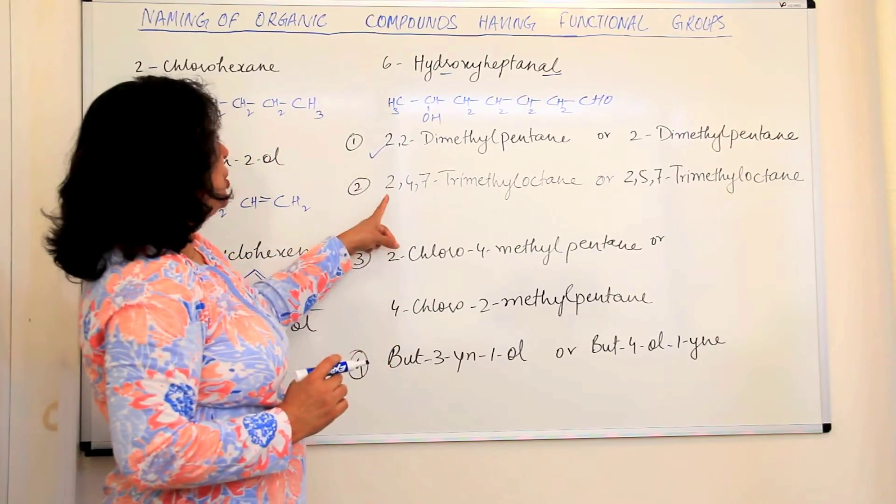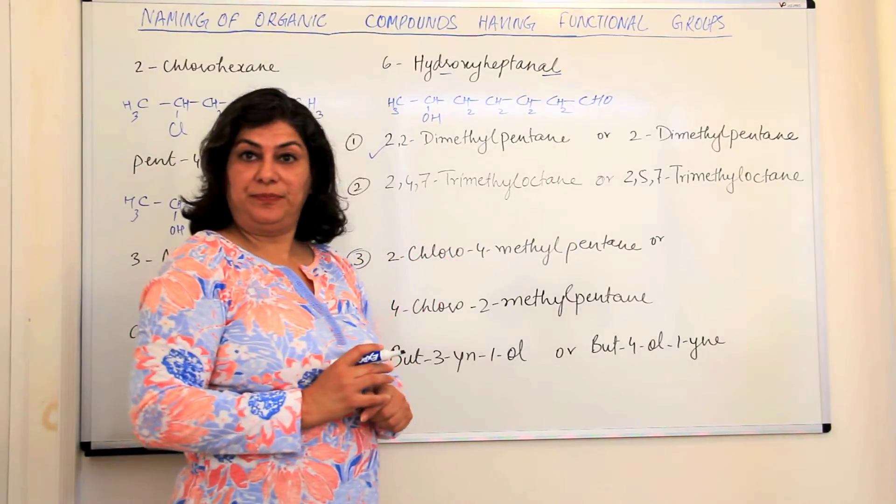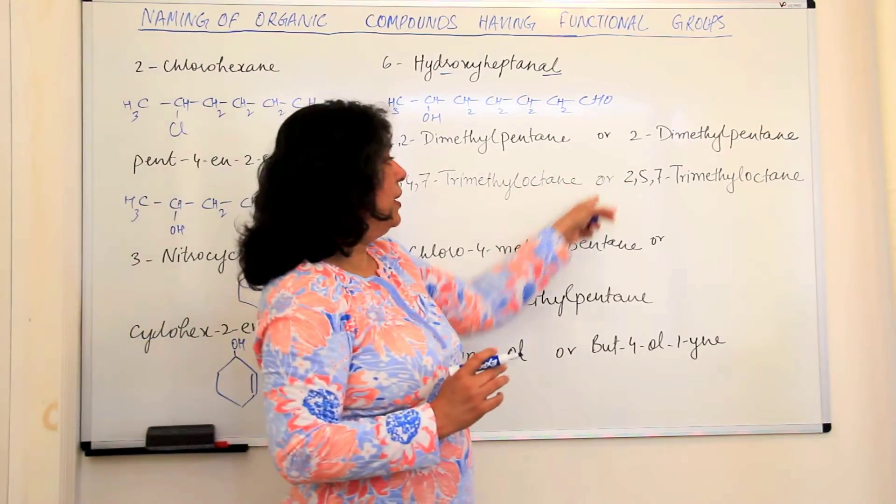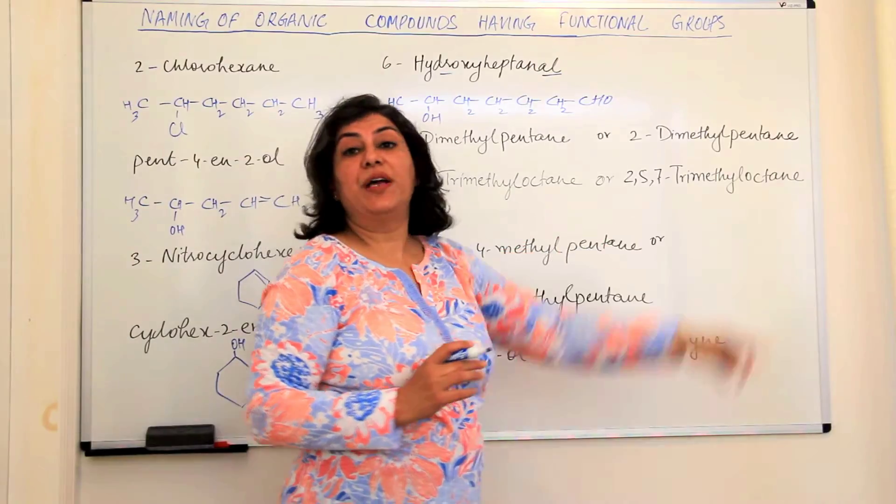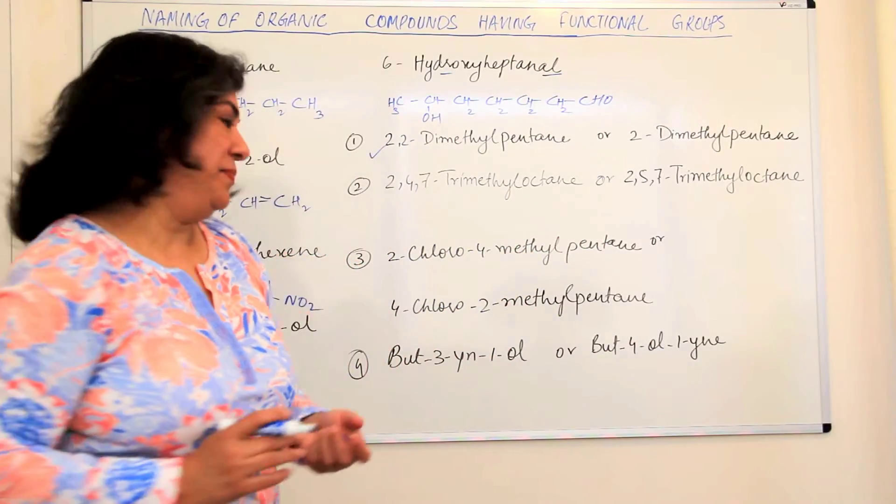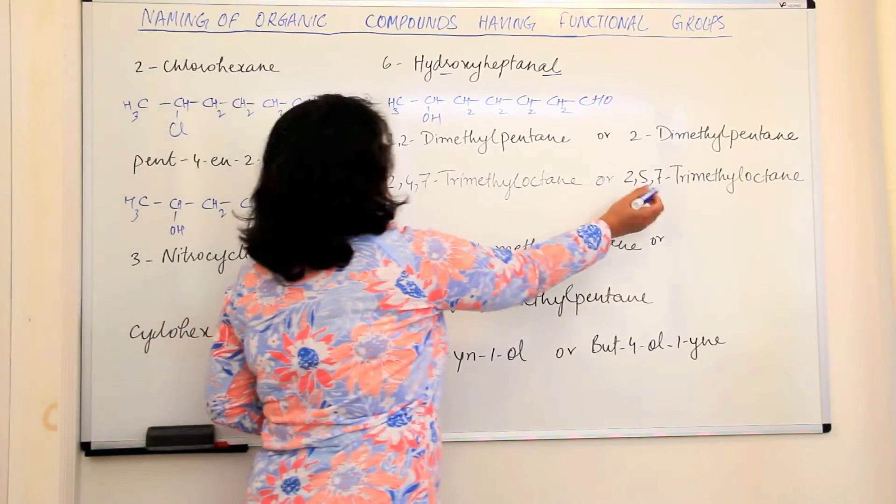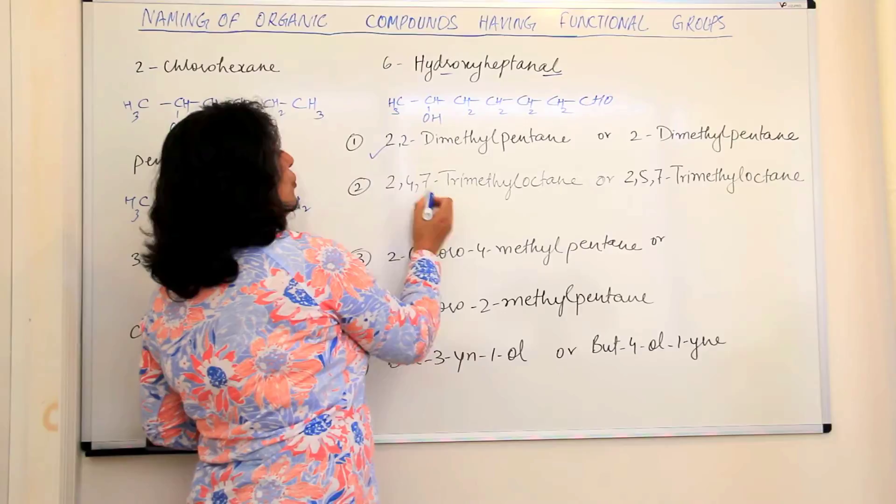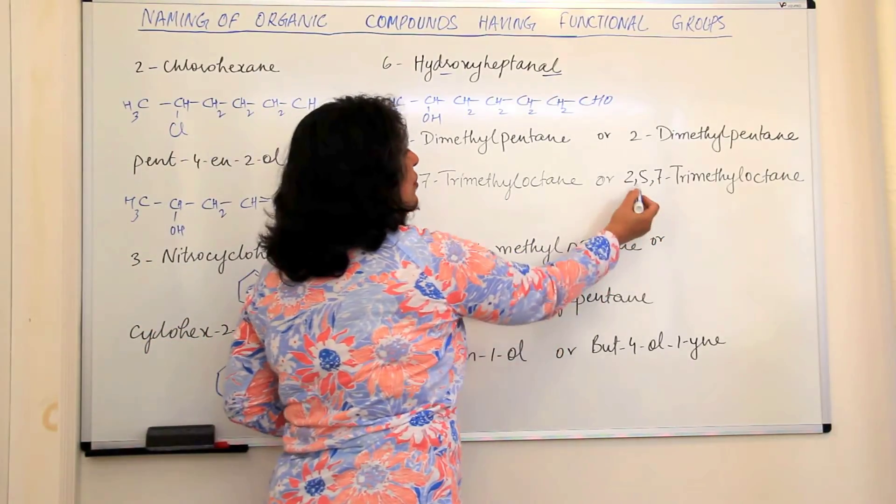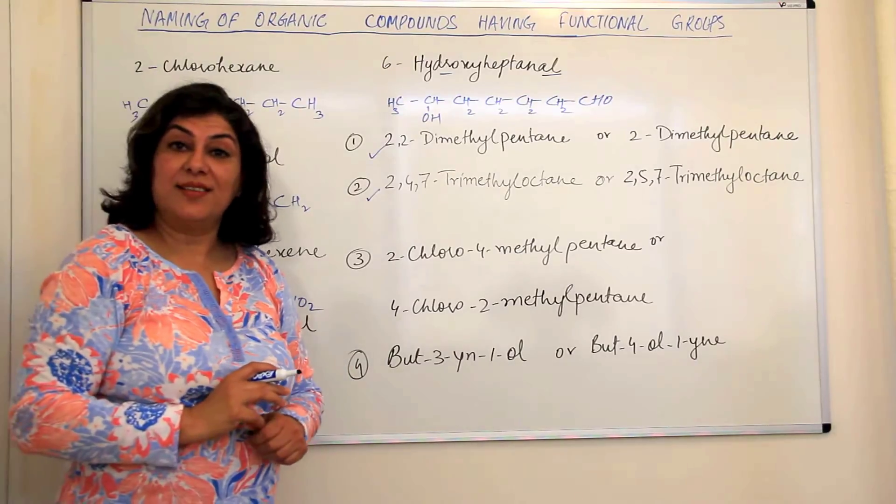The next compound is 2,4,7-trimethyl-octane or 2,5,7-trimethyl-octane which according to you should be the correct name. Looking at this we feel the lower locants, the lower sum of locants would be 2,4,7. Therefore 2,4,7-trimethyl-octane should be the correct answer.